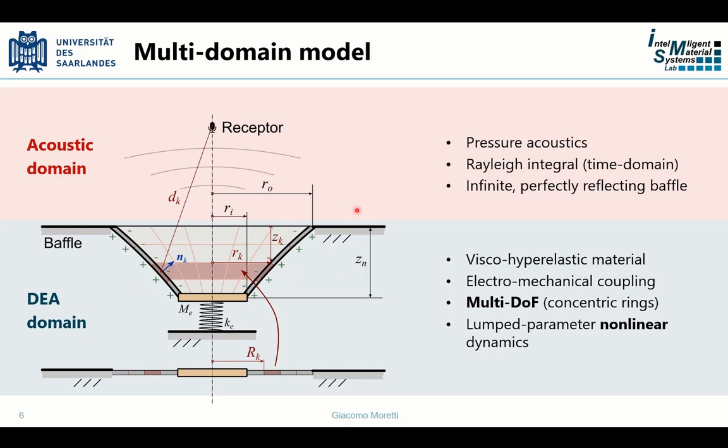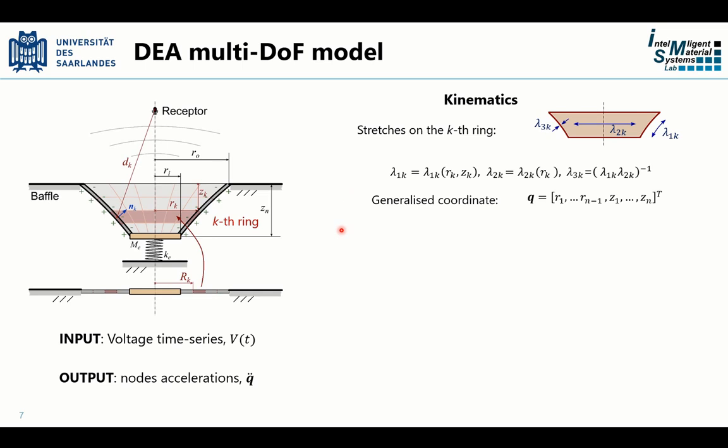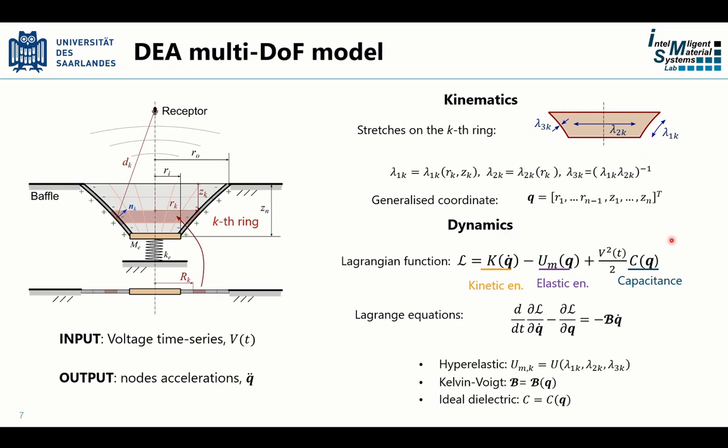As for the pressure field, we used classical acoustics, namely Rayleigh theory. Here, for simplicity, we assume that the DE lies in an infinite baffle which reflects back all of the incident waves. In short, the DE membrane structural model takes the voltage profile as the input and returns the membrane velocity and acceleration at different points. The kinematics are described by the location of the ring elements, for which we calculate the stretches, and the dynamics is formulated in terms of the Lagrange equations, assuming a Kelvin-Voigt viscous model with hyper-elastic springs.